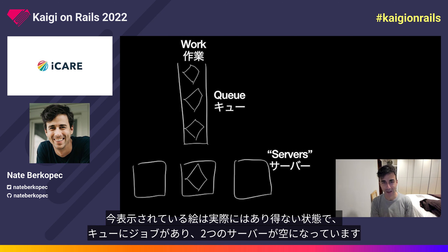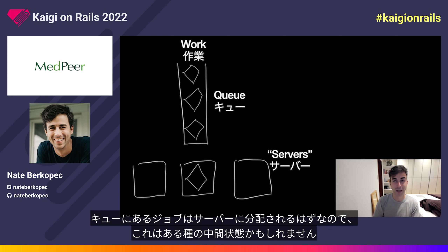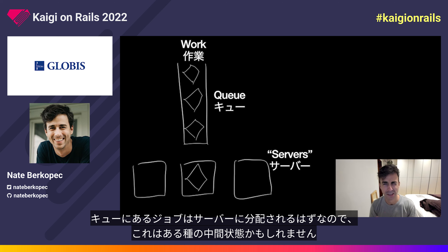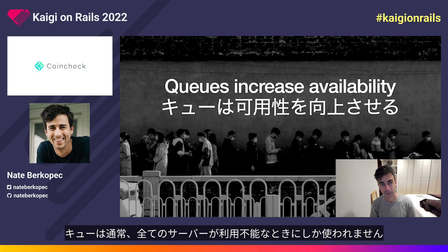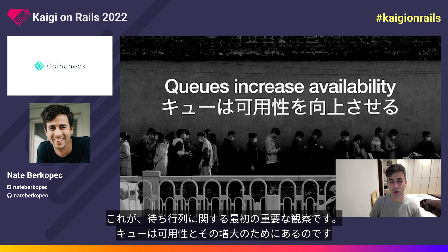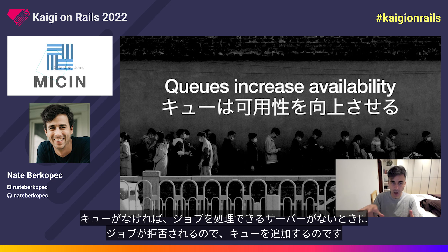The drawing I've given here is actually an impossible state for a queuing system. I drew work in the queue, work only on one server, and two empty servers. In this state, we would expect the two units of work from the queue to go into the servers. The important thing is that a queue is not used unless all of the servers are currently unavailable. That's our first critical observation: queues are for availability. We add queues because without a queue, the work would have to be rejected because no servers are available.